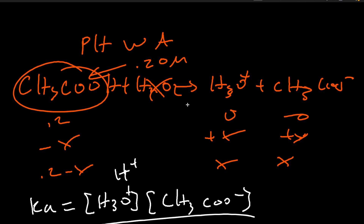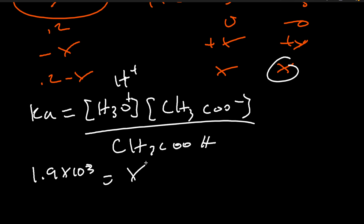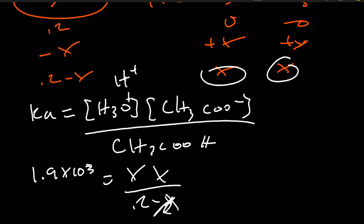Let's say Ka is given as 1.9 × 10³. So we plug in: 1.9 × 10³ = X² / (0.2 − X). Since Ka is really small, we can ignore the X in the denominator, so it becomes X² / 0.2. Multiplying both sides: 1.9 × 10³ times 0.2 equals X².